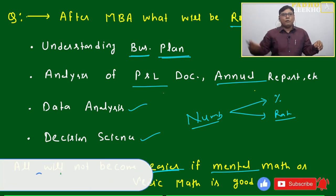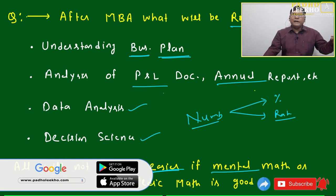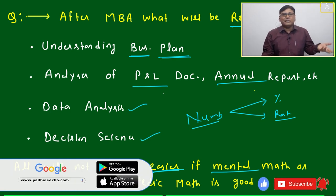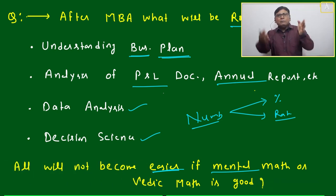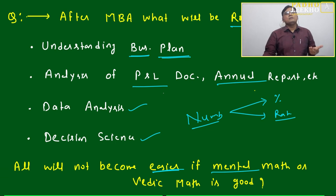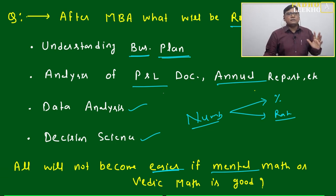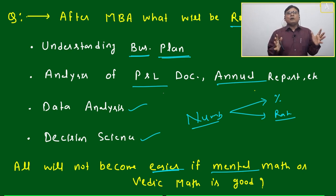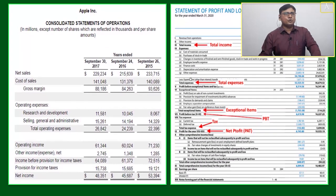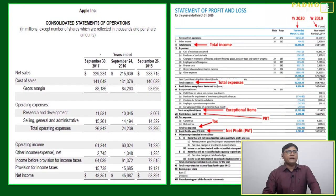Based on the requirement, data is represented in different formats — either tabular format or others. We study all this under Data Interpretation (DI), and it is analyzed with the help of language. Like Reading Comprehension (RC), you have to comprehend written things and analyze the numbers. These two jobs mainly — how smartly you are doing them, that much you will be successful.